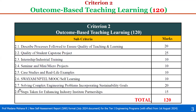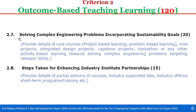Now two more: 2.7 and 2.8. Sub-criterion 2.7: Solving complex engineering problems incorporating sustainability goals — weightage 20. Here you have to provide details of courses with respect to project-based learning, problem-based learning, mini projects, integrated design projects, capstone projects, hackathons, or any other activity-based learning towards solving complex engineering problems targeting relevant sustainability goals.